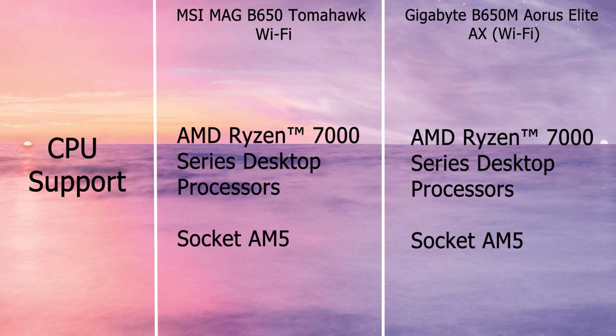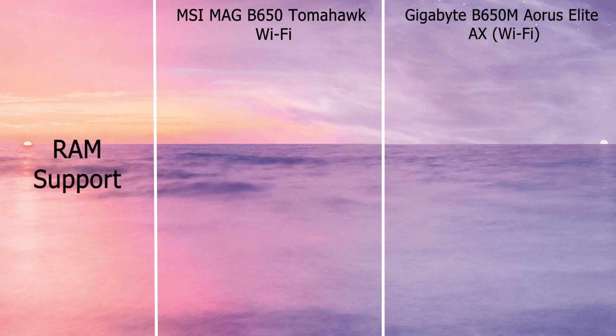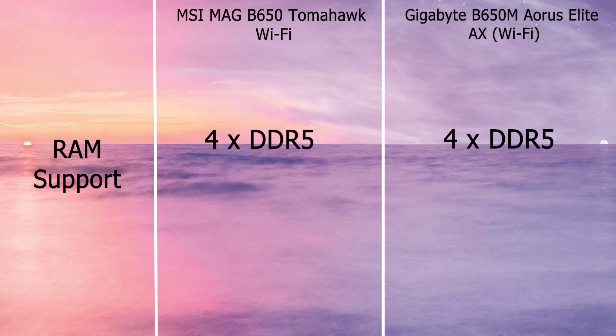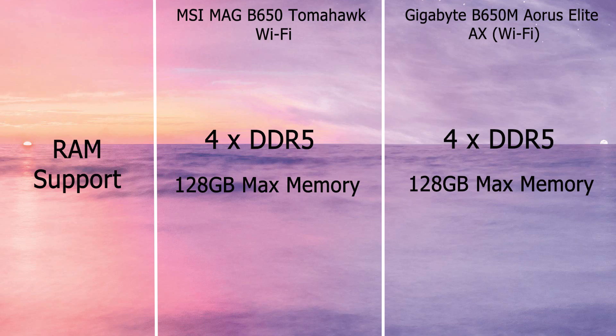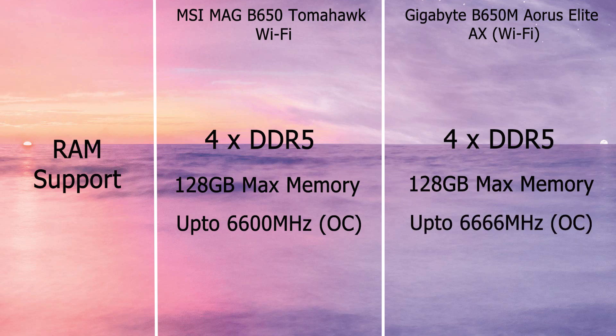Both motherboards support AMD Ryzen 7000 series latest desktop CPUs with socket AM5. Both the Tomahawk and Gigabyte come with 4 DDR5 RAM slots supporting up to 128GB DDR5 RAM. MSI claims to support RAM speeds up to 6600MHz in OC mode. Gigabyte also supports up to 6600MHz in OC mode.